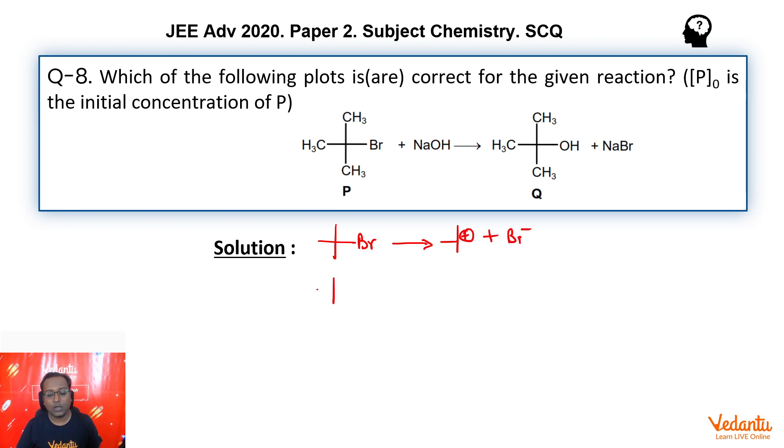Then, in the next non-selective fast step, this carbocation will react with OH minus to give you butanol. Overall, if we see what did we get overall from the reaction, the same that is given there. Tertiary butyl bromide reacts with OH minus to give tertiary butanol and Br minus.